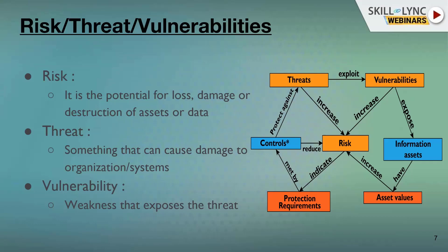Let me explain what a threat is. Threat is something that can potentially cause damage to the organization, the IT systems, or networks. And vulnerability is basically a weakness that exposes a threat — a weakness in the organization, either in IT systems or in the network, that can be exploited by the threat. So all three important terms — Risk, Threat, and Vulnerability — are interrelated to each other.